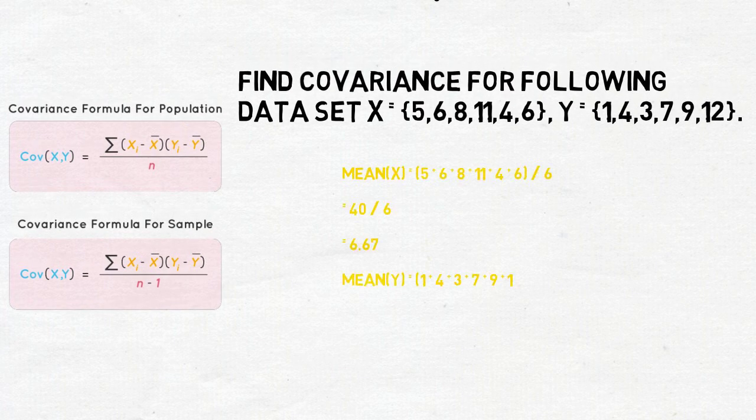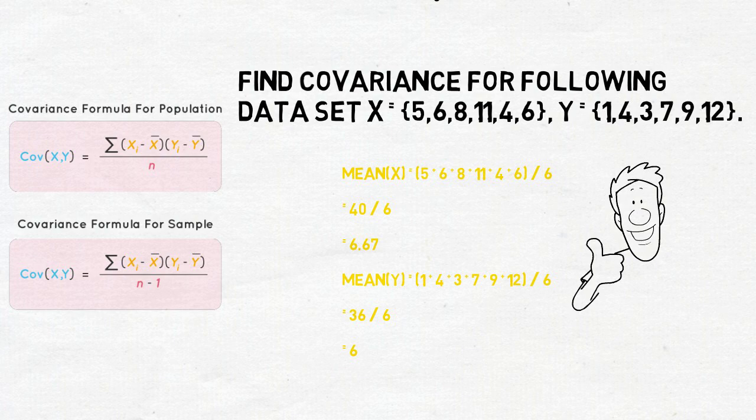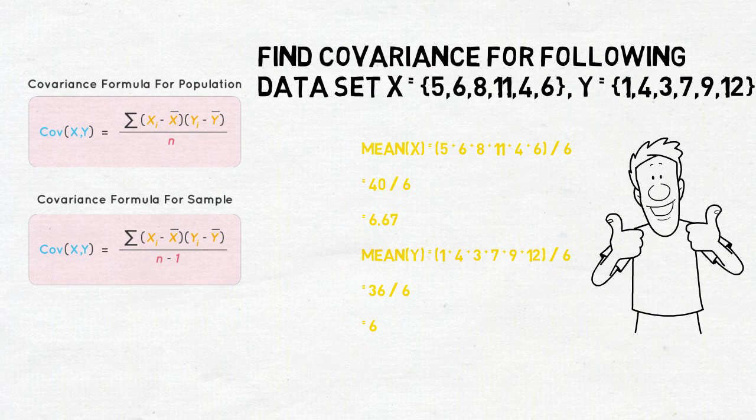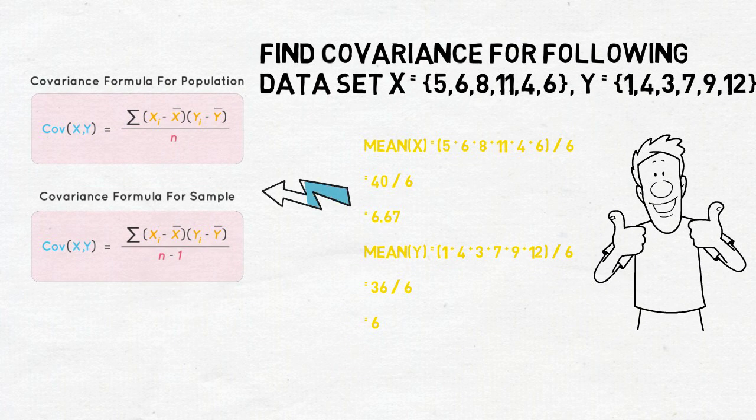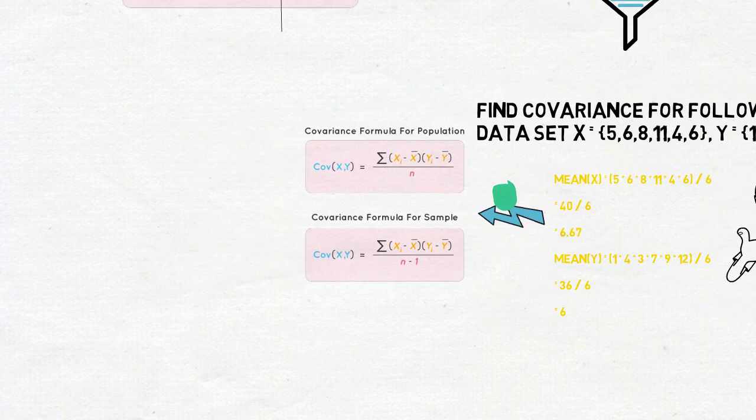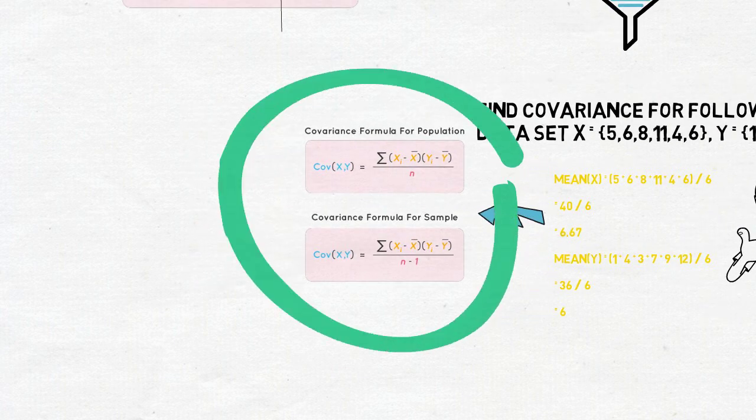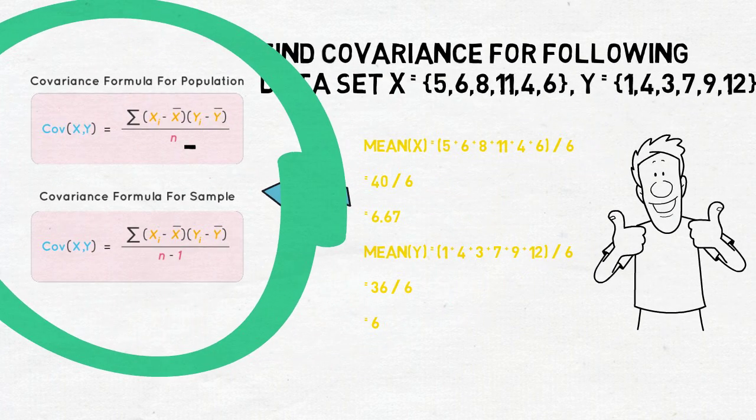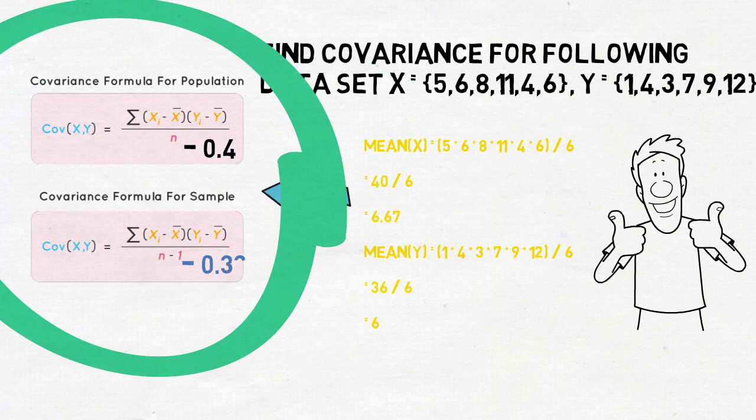Let's find the mean of x which is 6.62 and the mean of y which is 6. Now, when we substitute the value in our formula, we get minus 0.4 for the sample covariance and minus 0.33 for the population covariance.